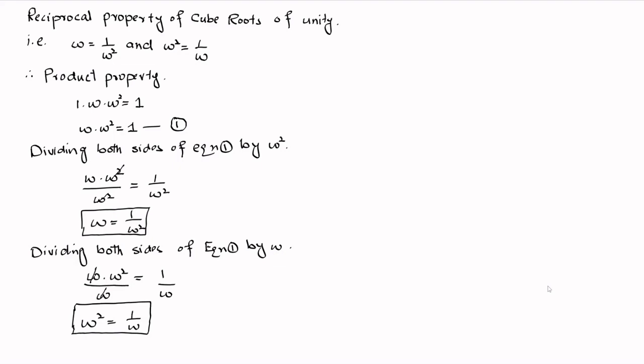So we have proved that omega is the reciprocal of omega square and omega square is the reciprocal of omega. Hopefully this is easy to understand. If you find the video helpful, please like the video, subscribe to the channel, and press the bell icon so that you can get notified when a math problem is solved.